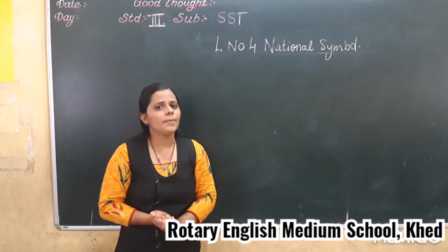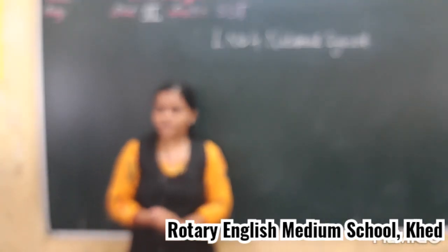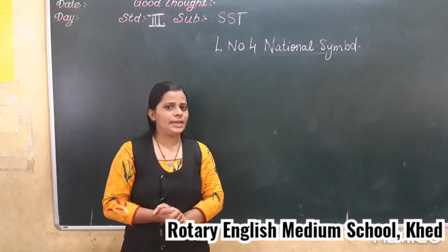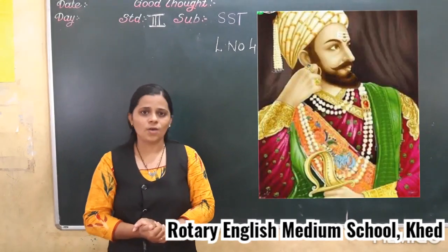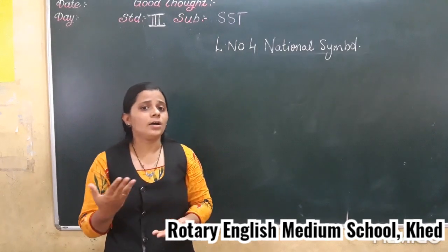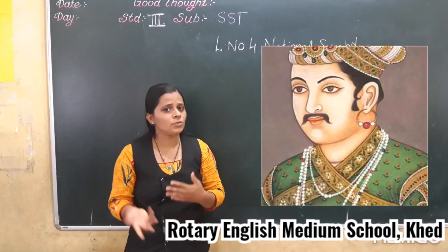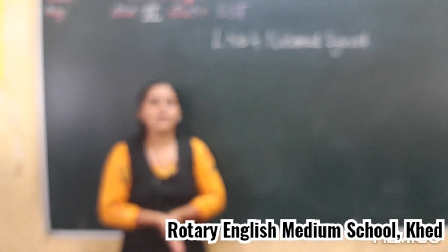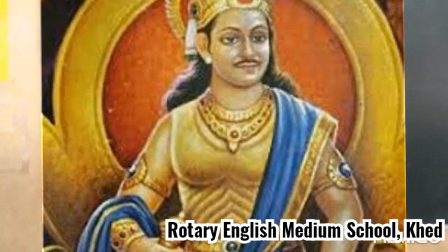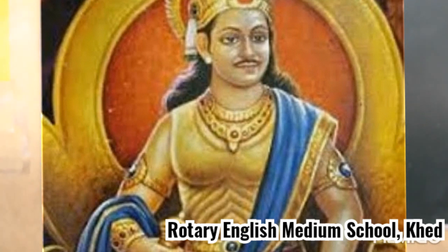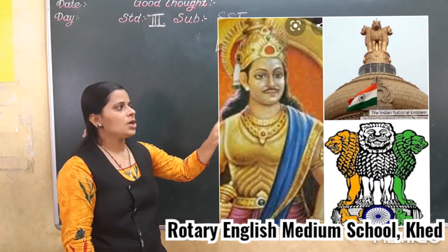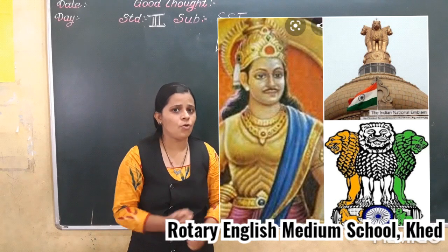Now, you have heard about the great kings, right? You have heard about the great king Shivaji, and another king Abba. Among them, the great king Ashoka. Ashoka was also a great king during the Maurya dynasty. During his rule, he built the Ashoka pillar at Sarnath, which is a stone pillar with four lions facing the four directions.